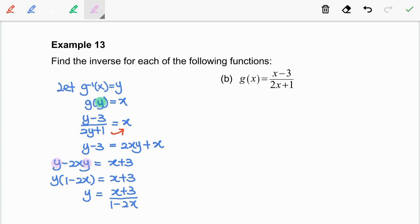So we know that g inverse equals y. Means the g inverse equals x plus 3 over 1 minus 2x. Well, that's it. Thank you.